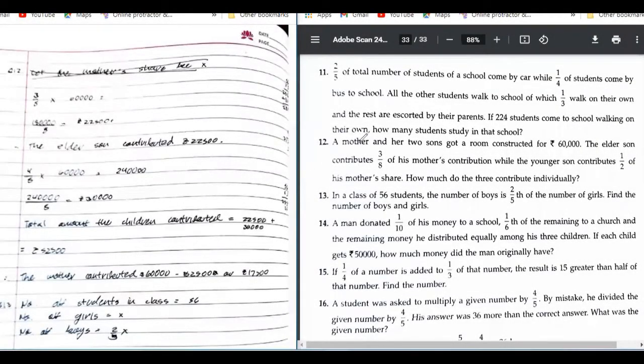So, question number 12. A mother and her two sons got a room constructed for 64,000 rupees. The elder son contributed 3/8 of his mother's contribution.